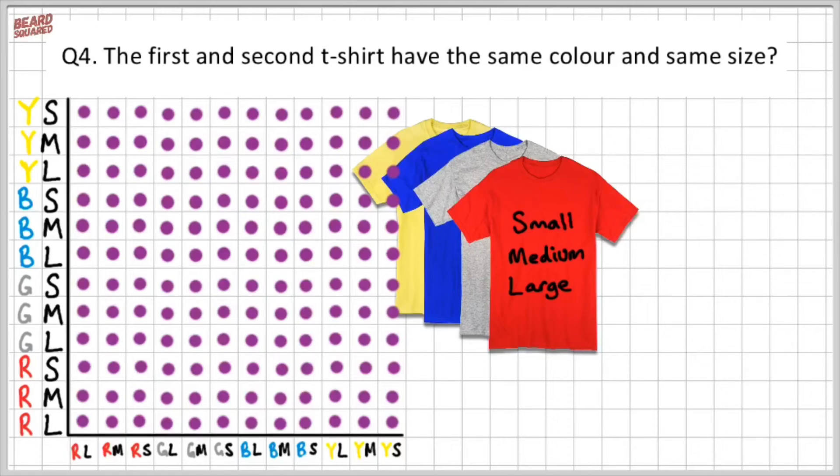And between those two shirts, I'm finding the probability of buying the same color and the same size. So I'm going to be looking for a red large with a red large, a red medium with a red medium, a red small with a red small, and so on.